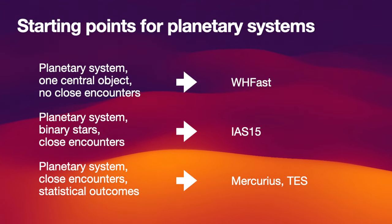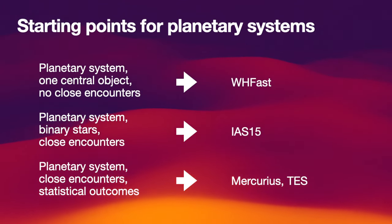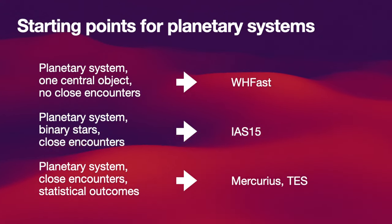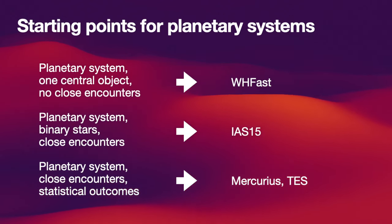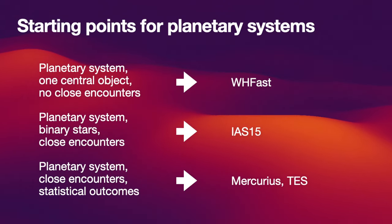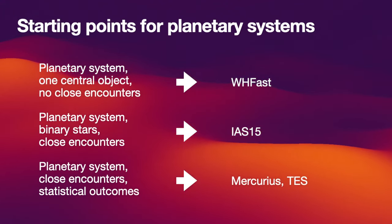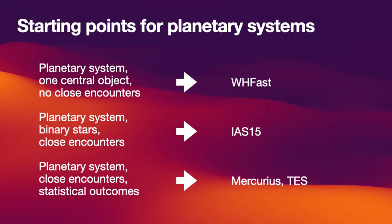If you have a planetary system where you expect close encounters, an orbit around a binary star, or any complex hierarchy not as simple as the solar system, you might want to use IAS15. This integrator works in most cases out of the box without fine-tuning any parameters. It might be significantly slower than WHFAST, but in most cases it will give you a very accurate result. For example, if you have an asteroid coming close to Earth and you want to find out how close it gets, IAS15 would be your choice.